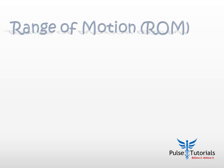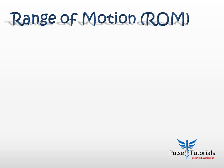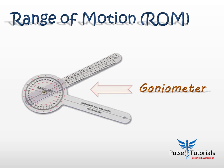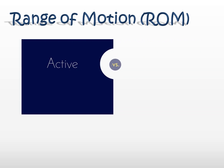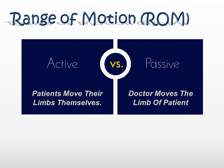Step three is measuring the range of motion. For this, we require an instrument called the goniometer. Each goniometer has two arms: the stationary arm and the moving arm. The stationary arm should always be on the proximal bone of a joint, and the moving arm should be on the distal part. Always note your findings in degrees of movement compared from the standard resting position. There are two ways of assessing range of motion: active and passive. Active is when the patient moves their limbs by themselves; passive is when the doctor moves the limb. Always do active first, then passive.